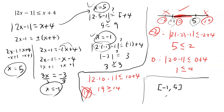In interval notation the answer is negative 1 to 5 with brackets, since the endpoints are included. You can also write it as the inequality negative 1 is less than or equal to x is less than or equal to 5. Write the interval notation when the question asks for it, and write the inequality form when it just says find the solution for x.